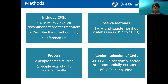We included clinical practice guidelines if they had a minimum of two explicit recommendations for treatment or management of a condition. They also had to describe their methods in the main manuscript or supplementary documents, and provide a reference list. We searched the TRIP and Epistemonikos databases from 2017 to 2018. Two people screened and two people extracted the data independently. We ended up with 417 guidelines, randomly sorted, and sequentially screened to finally include 50 guidelines.